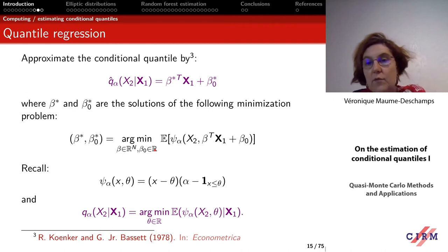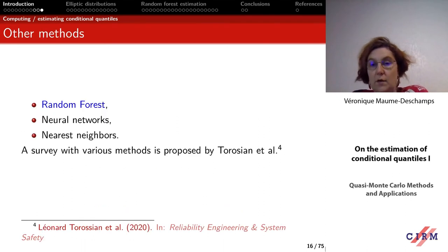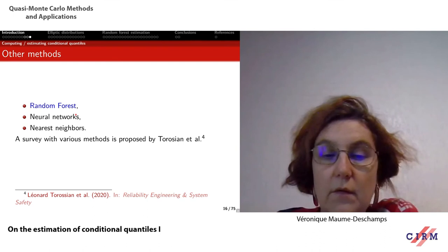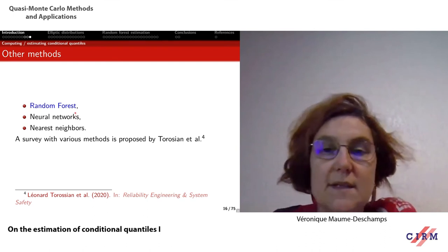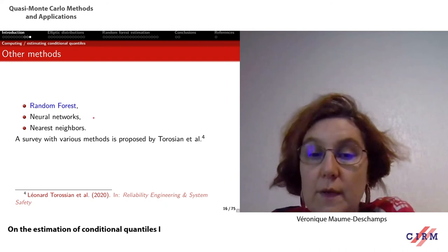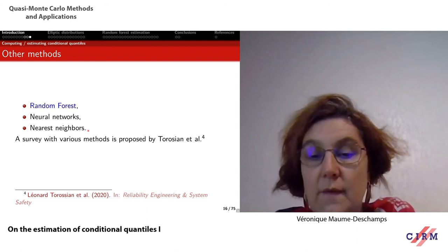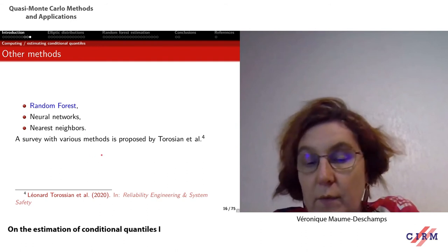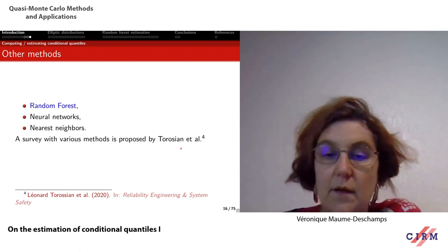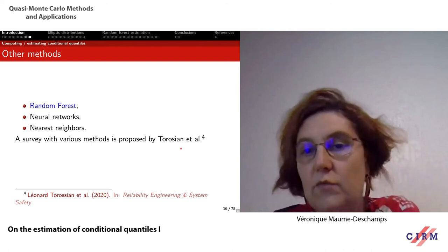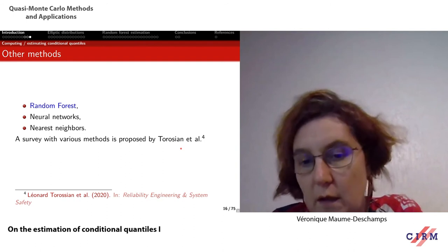There are many methods to estimate conditional quantiles. I mentioned random forests — that's what we will see this afternoon and tomorrow. There are also methods based on neural networks and nearest neighbors. For example, Leonardo Rossian's survey paper covers the various methods and is quite interesting.